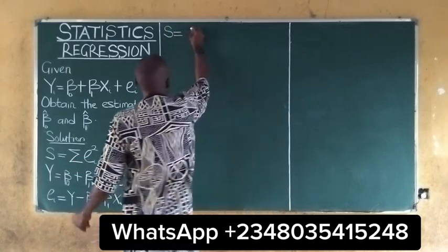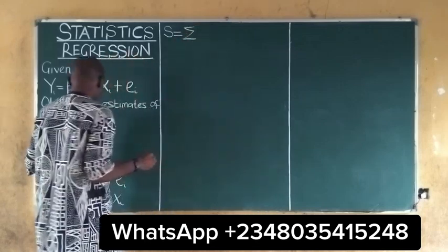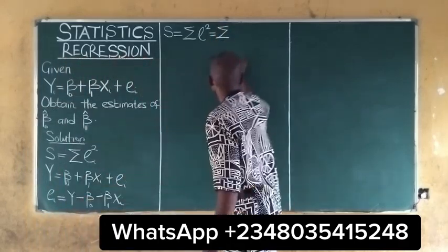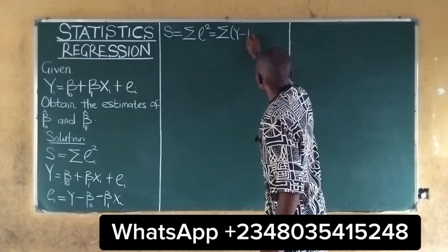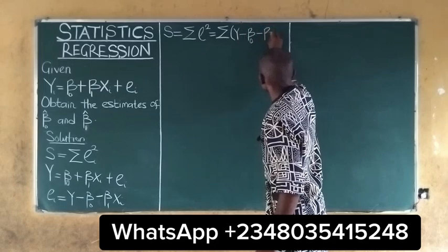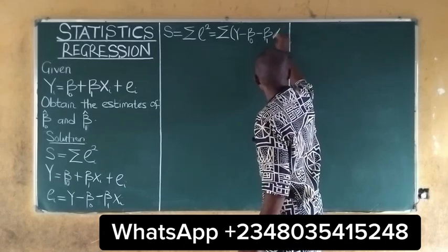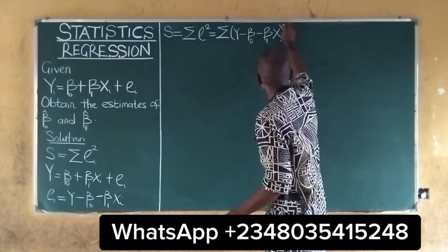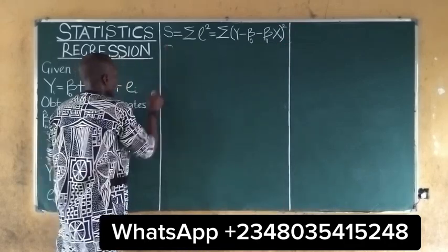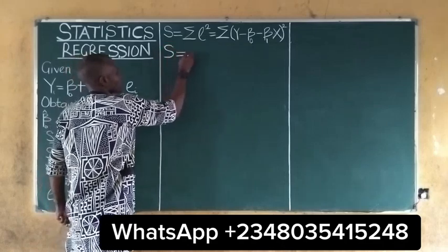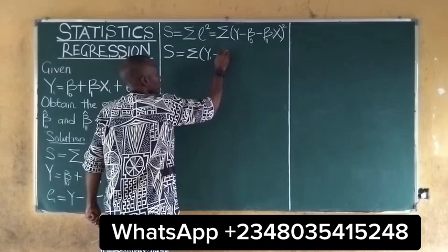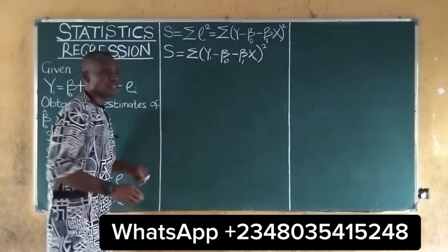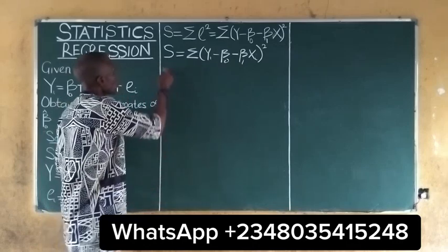The standard error will be equal to the summation of the error term squared, which is equal to summation of (Y minus B0 minus B1*Xi) all squared. To maximize or minimize the function, we differentiate and equate to zero.